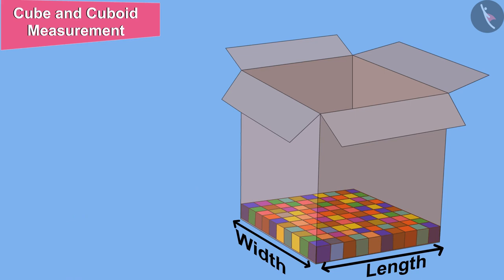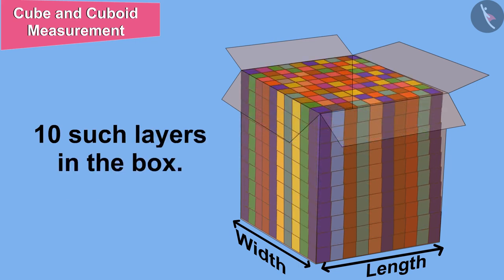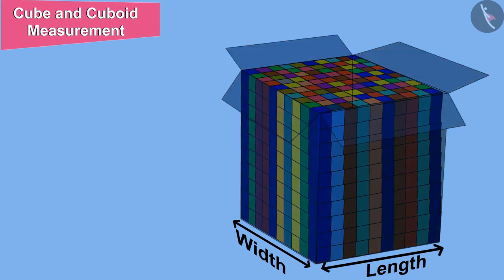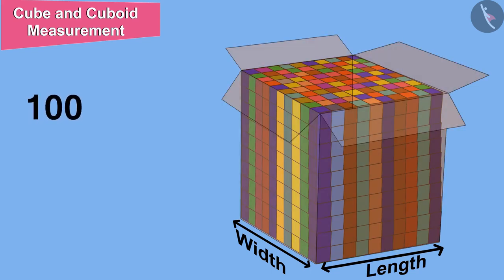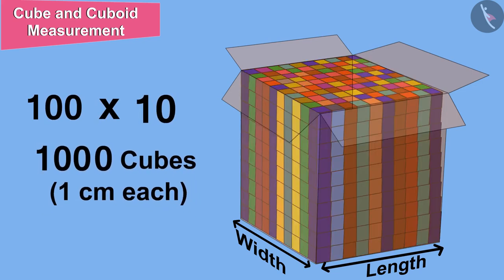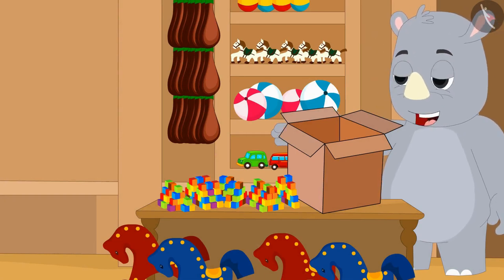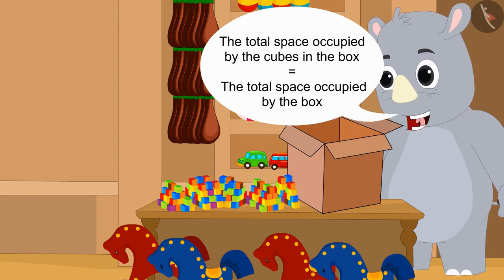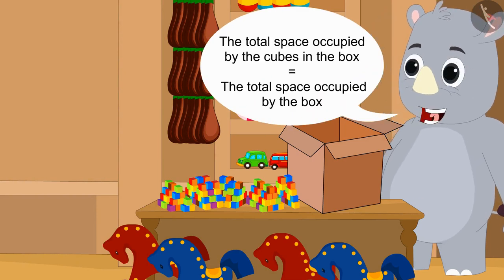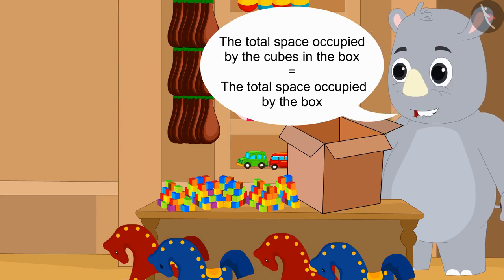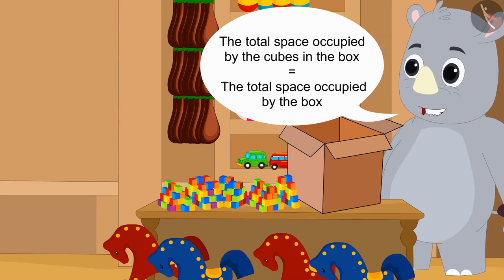And there will be 10 such layers in the box. It means this cube-shaped box will contain 100 times 10, or 1000 cubes of 1 cm dimension. Because the thickness of the cardboard is negligible, the total space occupied by the cubes in the box will be equal to the total space occupied by the box.